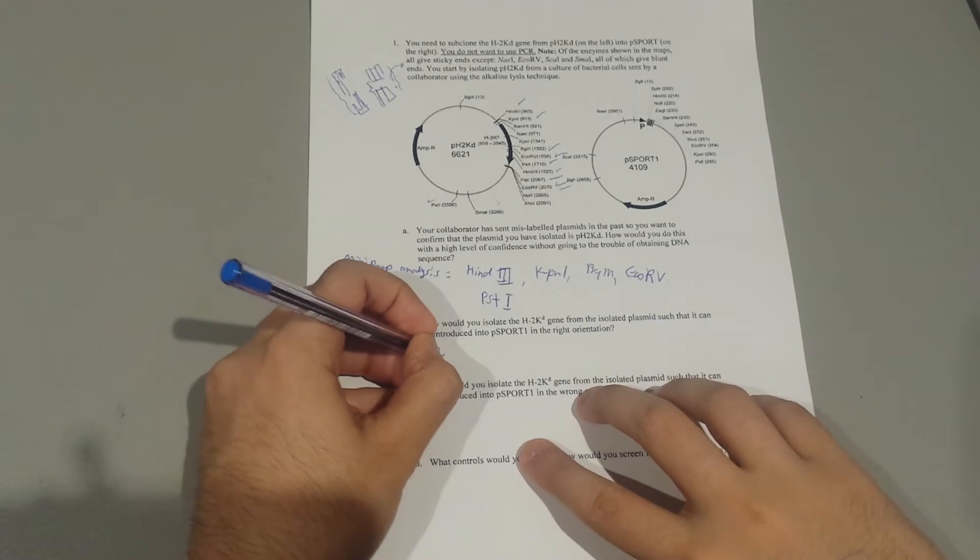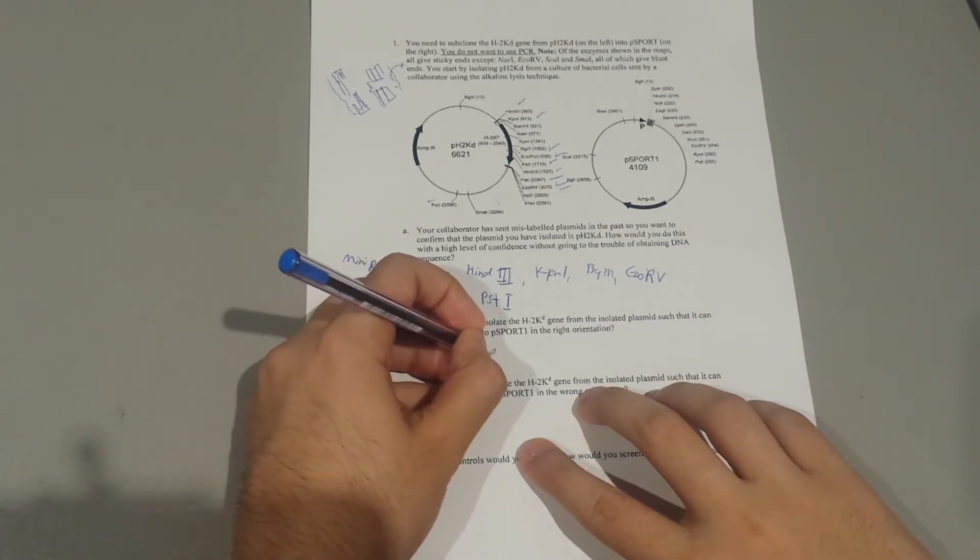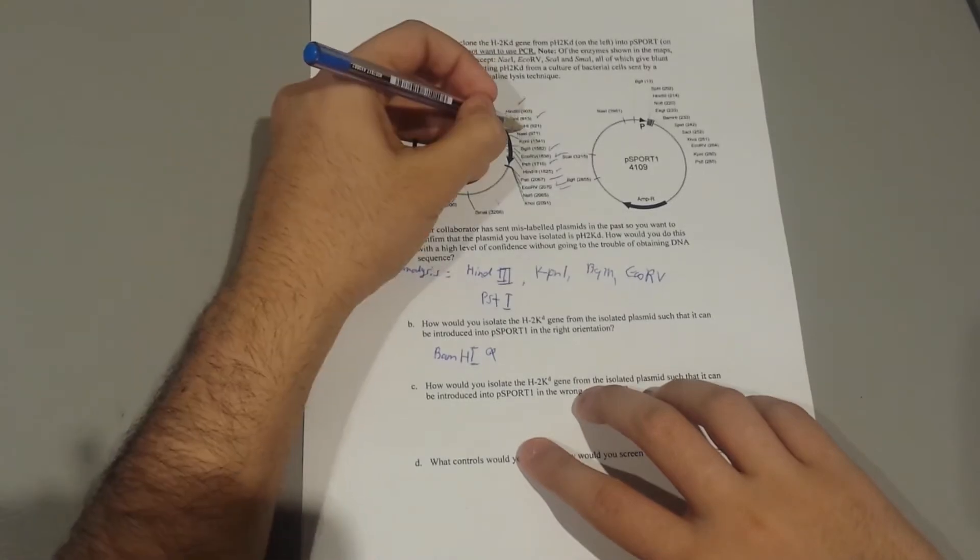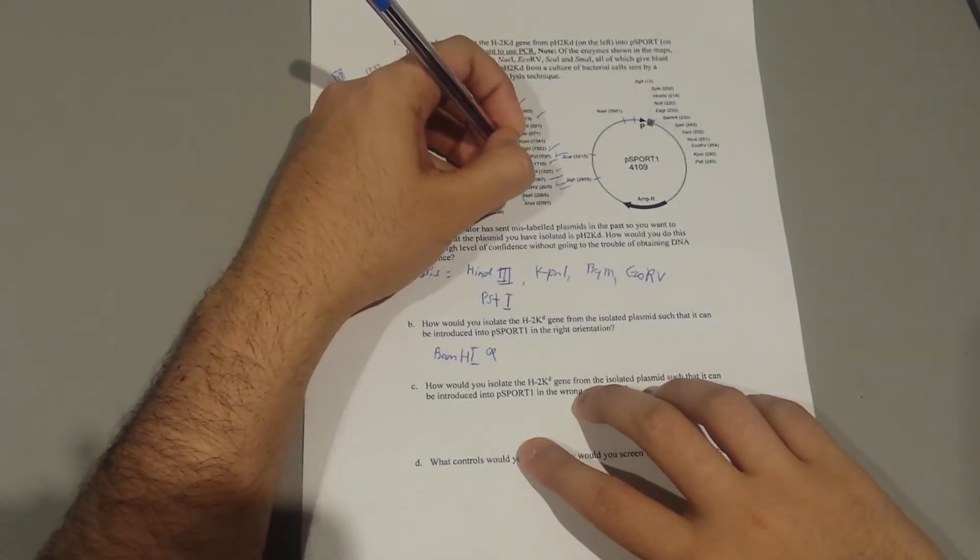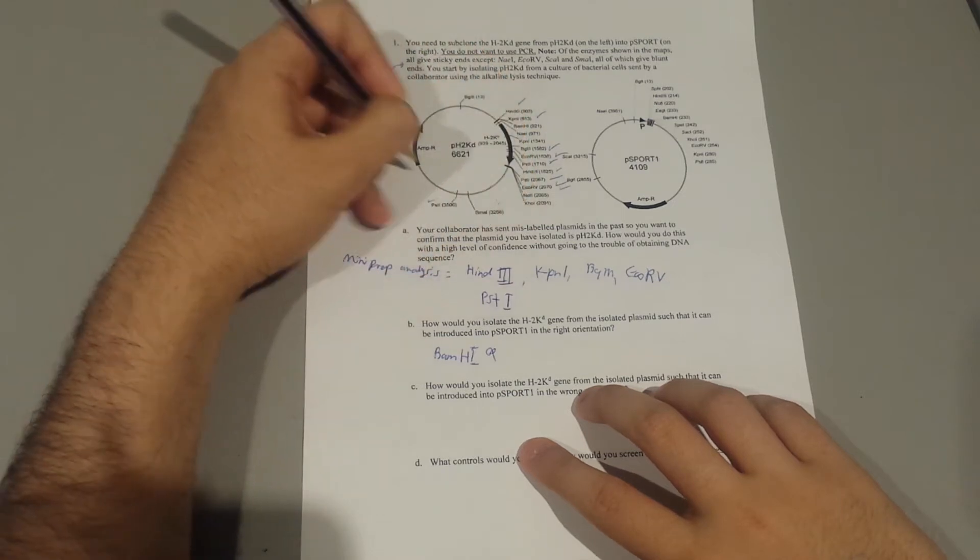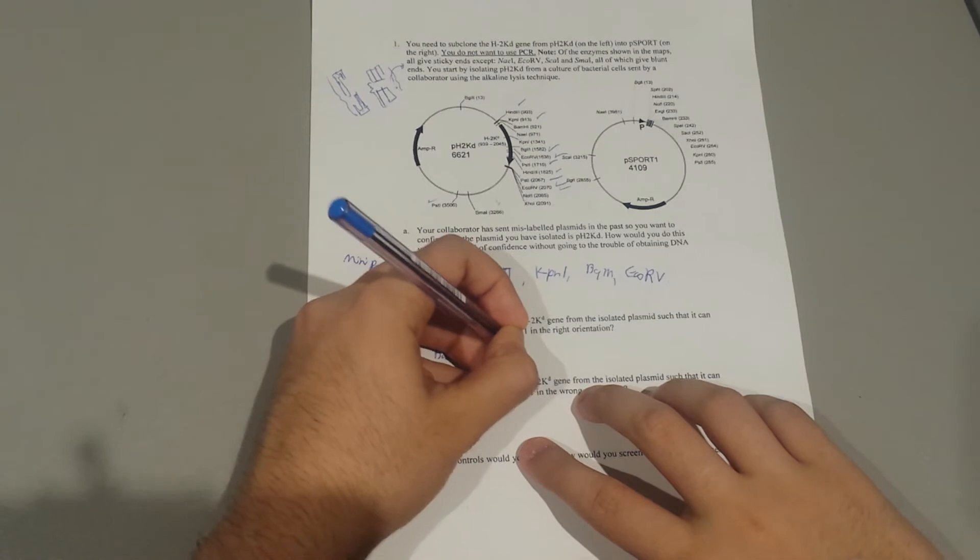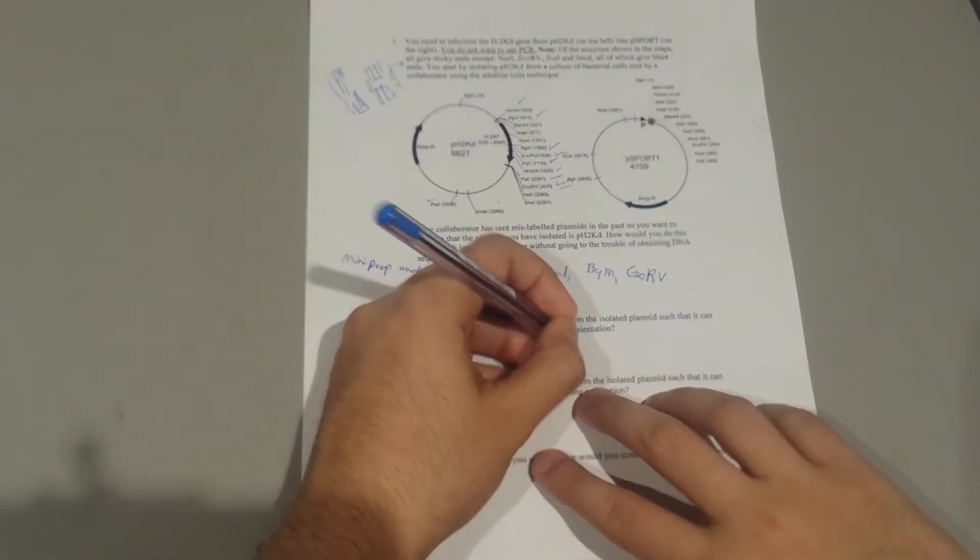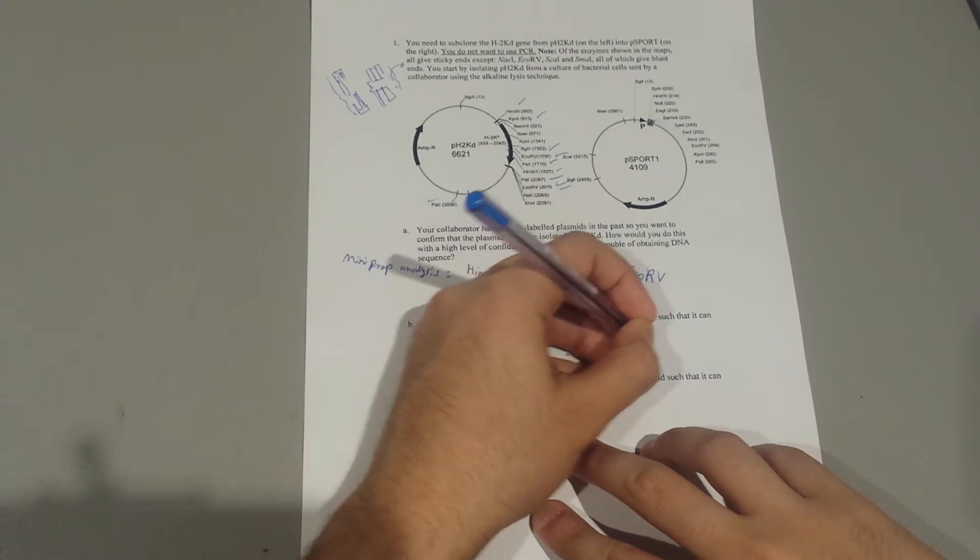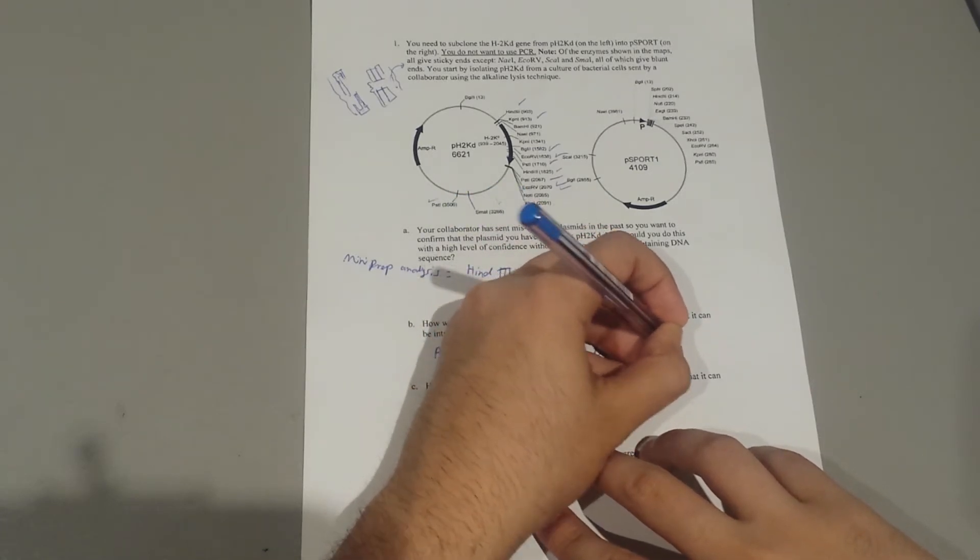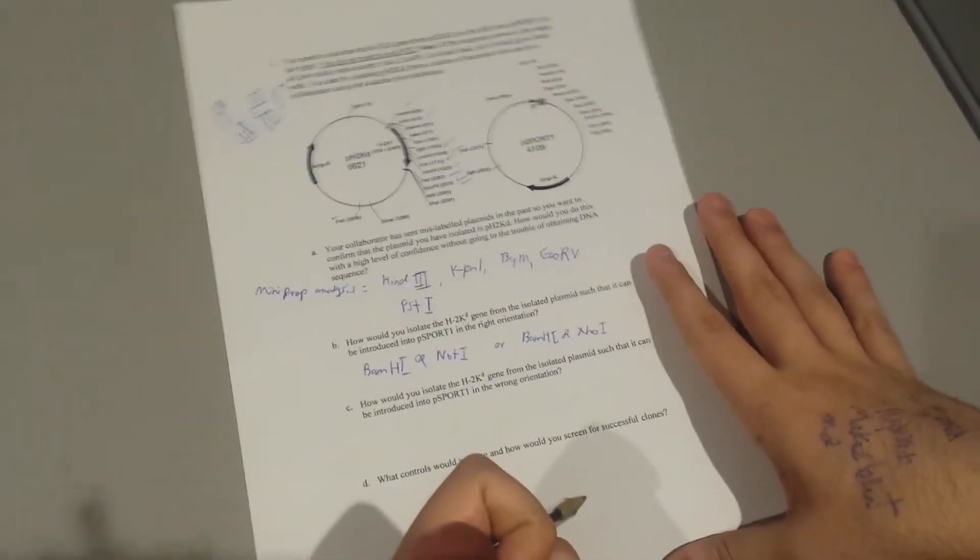We're going to use BamHI and BamHI there, NotI, or BamHI and XhoI. We're going to use these two.